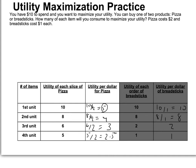Now go item by item — what do you purchase first? Which has the most utility per dollar? That would be the first breadstick, so you purchase it and have spent $1. The next largest is the 8 on the breadstick side, still larger than the 5 utils per dollar of the first unit of pizza. So you spend one more dollar buying a second breadstick. Now, since the next breadstick would only give you 2 utils per dollar and the first unit of pizza gives you 5, you purchase the first unit of pizza for $2 — now at $4 spent. Next, the second unit of pizza costs $2 more, putting you at $6 spent.